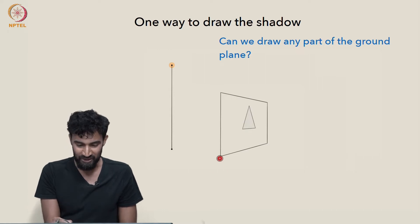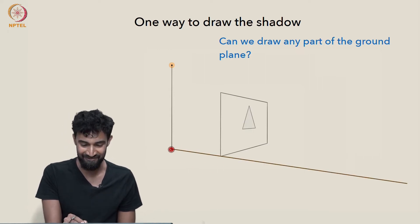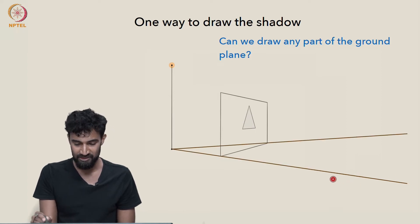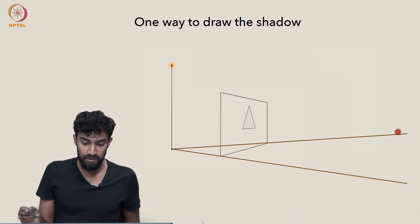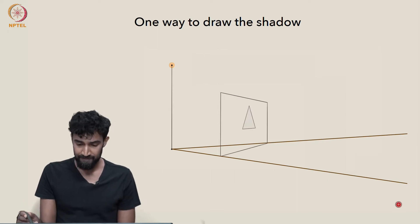Well there's one obvious way to get some more, it's to connect the dots of what we already have. These two points are on the ground, so this line is on the ground. Similarly, this point is on the ground and this one is, so we get another line on the ground plane. So, we have two lines on the ground plane. Where do we go from there?